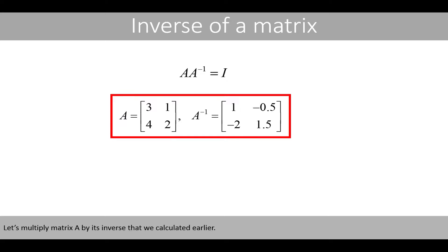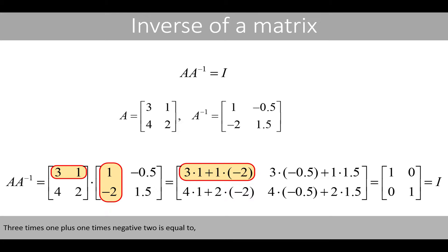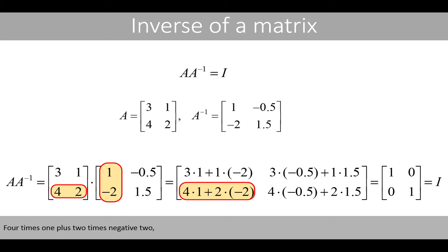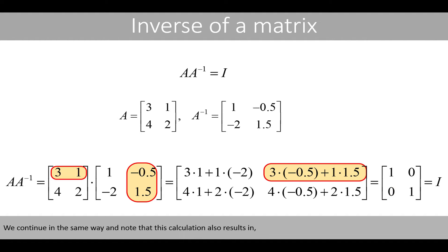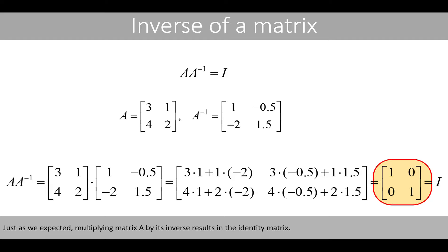Let's multiply matrix A by its inverse that we calculated earlier. We multiply the two matrices by first multiplying the first row of matrix A by the first column of the inverse of matrix A. 3 times 1 plus 1 times negative 2 is equal to 1. 4 times 1 plus 2 times negative 2 is equal to 0. We continue in the same way and note that this calculation also results in 0, and negative 2 plus 3 is 1. Just as we expected, multiplying matrix A by its inverse results in the identity matrix.